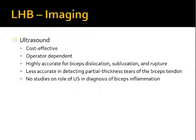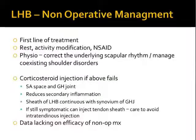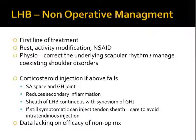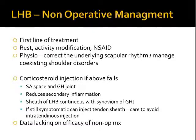First-line treatment is non-operative with rest, activity modification, and non-steroidal anti-inflammatories. Physiotherapy can also be carried out to manage any coexisting shoulder problems. Corticosteroid injection can be trialed if the initial non-operative management fails — this can be via subacromial or glenohumeral injection to reduce secondary inflammation and sheath inflammation. If the patient remains symptomatic, a selective injection into the tendon sheath can be undertaken, but care must be taken to avoid an intratendinous injection, which can lead to tendon rupture. There is no good data on the efficacy of non-operative management.